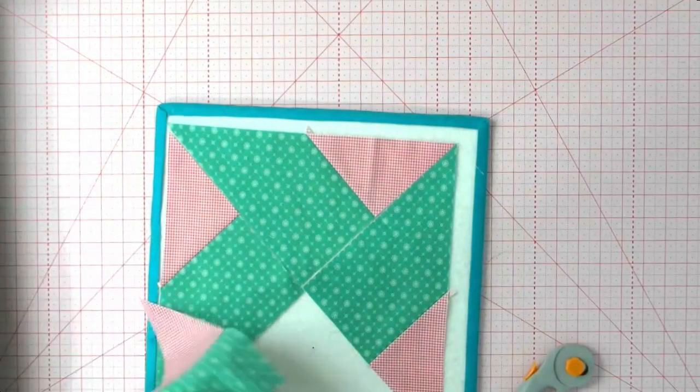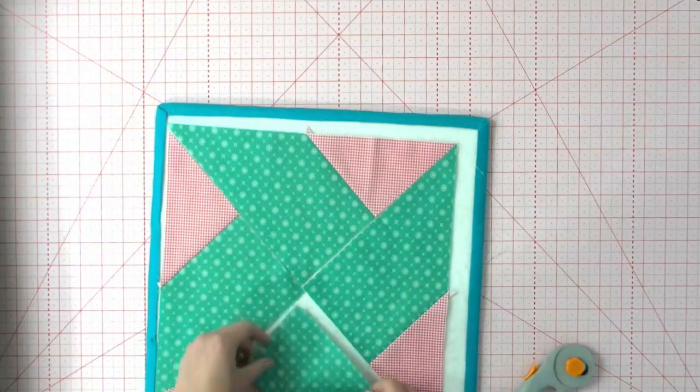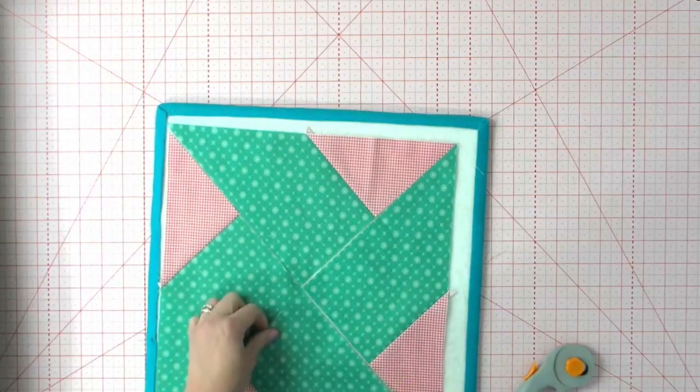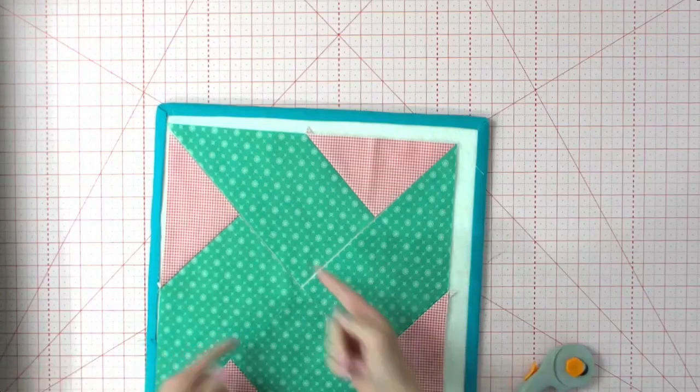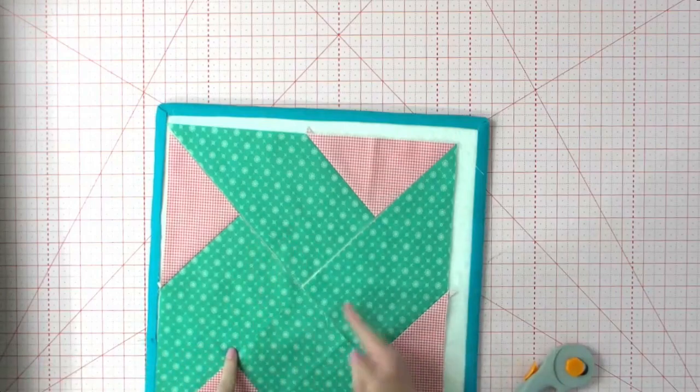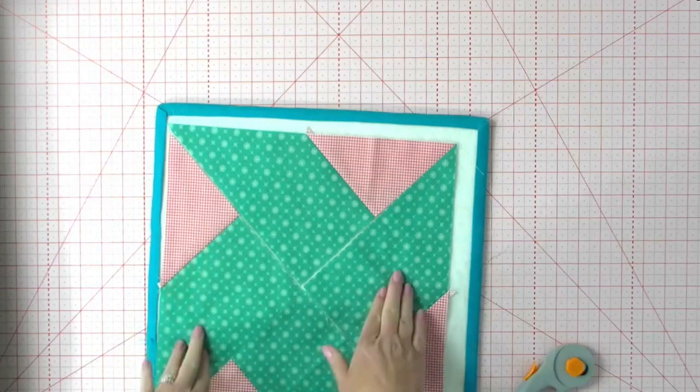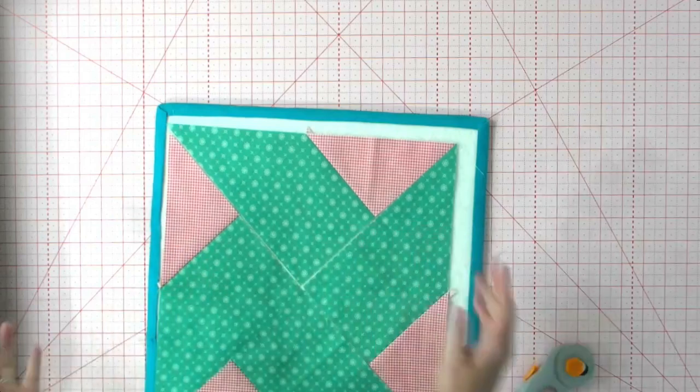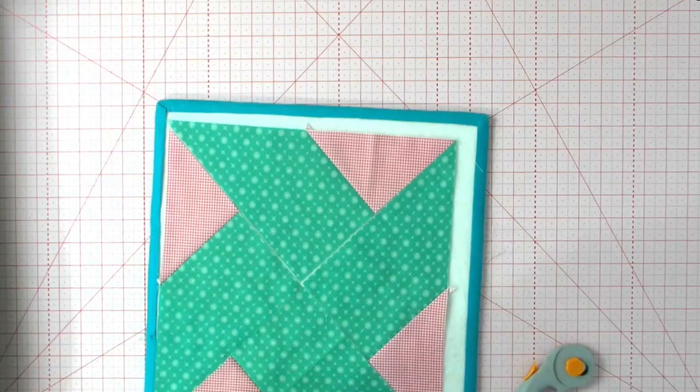That is so fun and so fast. Love it. So now we're just going to make it kind of like an hourglass block. We're going to sew these two together and these two together, iron them in opposite directions so we can nest that seam and get that perfect point in the center. And our block will be finished. How fast was that? So fun.